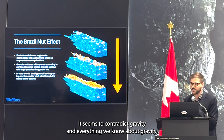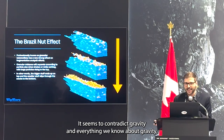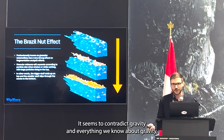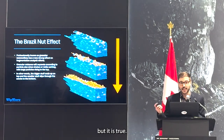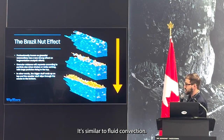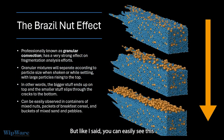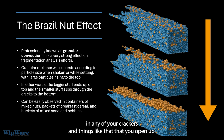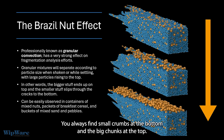The biggest stuff always rises to the top. It seems to contradict gravity and everything we know about gravity, but it is true. It's similar to fluid convection. You can easily see this in any of your crackers and things like that that you open up — you always find the small crumbs at the bottom and the big chunks at the top. The same thing happens in fragmentation.